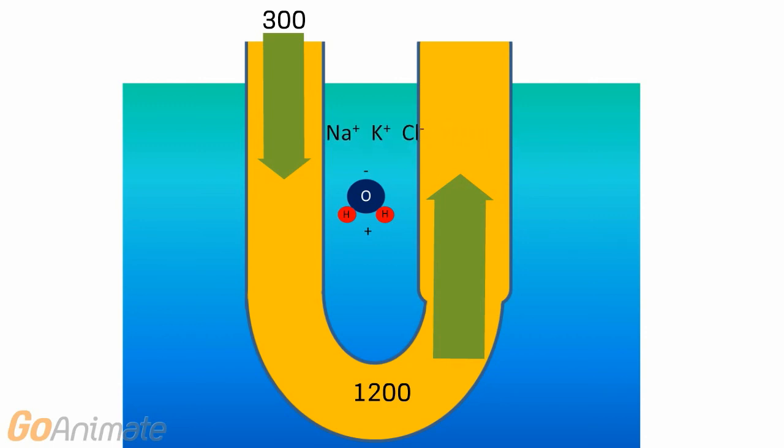The active transporters transport sodium, potassium, and chloride out of the ascending limb. The solution becomes less concentrated until it reaches 100 milliosmoles, a hypotonic solution.